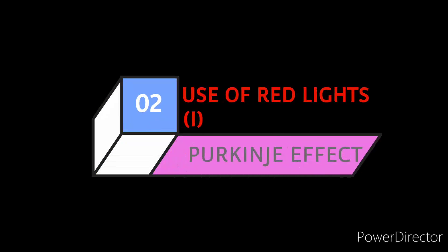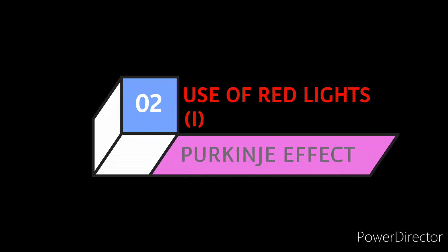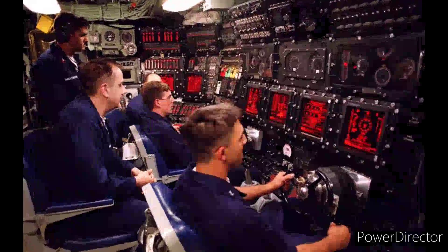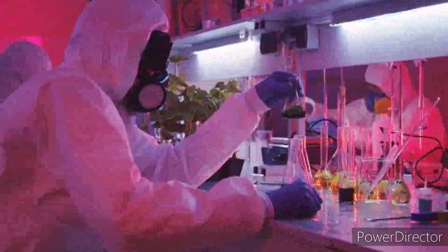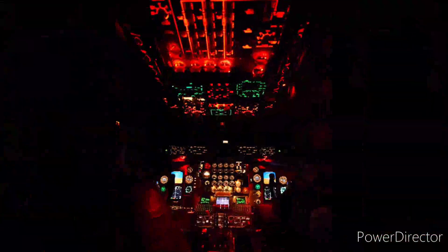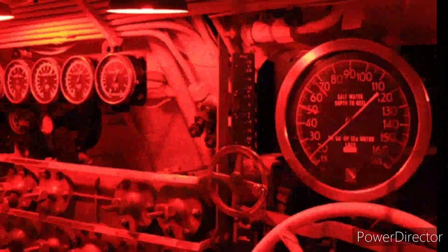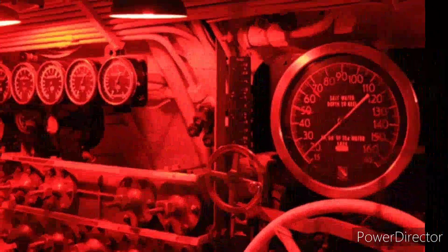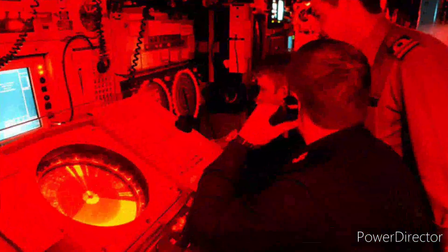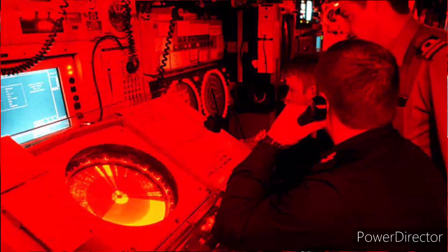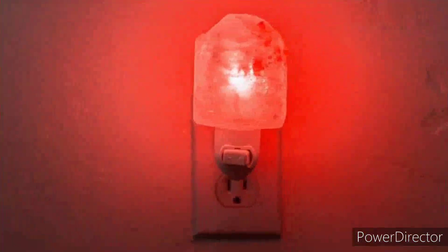Use of red lights: The insensitivity of rods to long-wavelength light has led to the use of red lights under certain special circumstances, for example, in the control rooms of submarines and research laboratories, aircraft, or during naked-eye astronomy. Red lights are used in conditions where it is desirable to activate both the photopic and scotopic systems. Submarines are well-lit to facilitate the vision of the crew members working there, but the control room must be lit differently to allow crew members to read instrument panels yet remain dark-adapted.